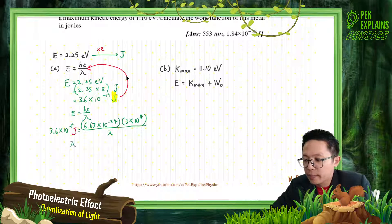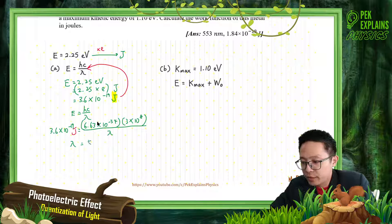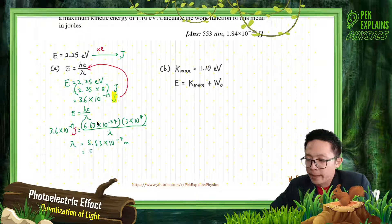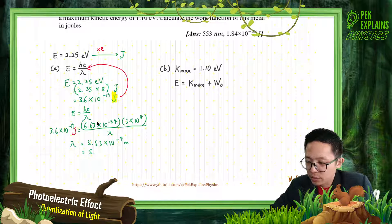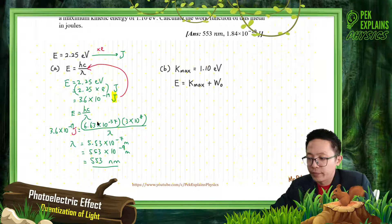Our wavelength works out to 5.53 × 10⁻⁷ meter. If you convert to nanometer, this becomes 5.53 × 10⁻⁷ m, which since exponent negative 9 is nano, equals 553 nanometers. You can leave your answer either in SI unit meters or nanometers — both will be accepted.